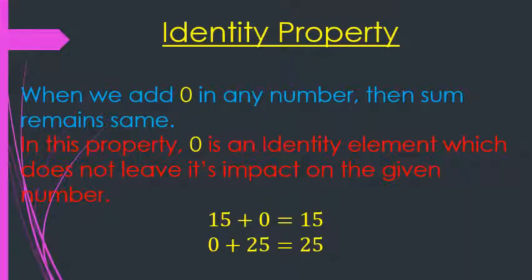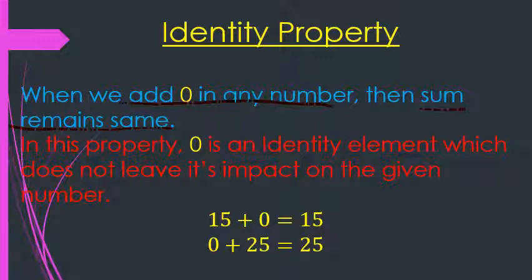The next is the identity property. When we add 0 to any number, the sum remains the same. Suppose if you look here — 15 plus 0: it is like you have 15 apples and you add 0 to it, so you still have 15 apples remaining with you. So when you add 0 to it, it doesn't change.